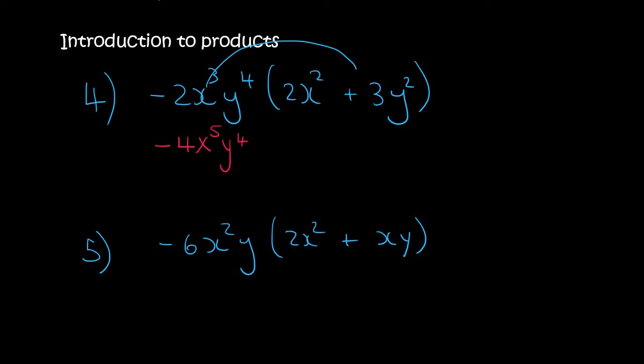Now we are going to multiply those two together. So minus 2 times 3 is minus 6. Then the x3. There is no other x's, so it's just x3. And then for the y's, it's going to be 4 plus 2, which is 6.